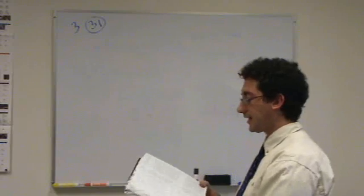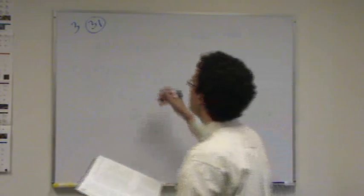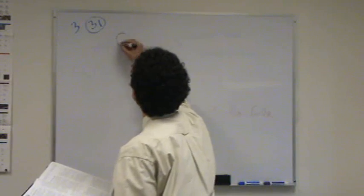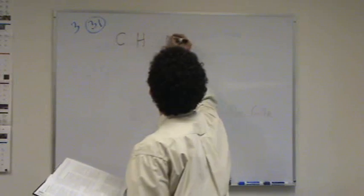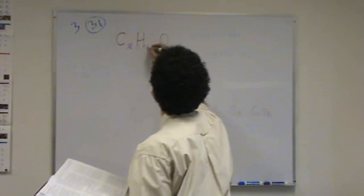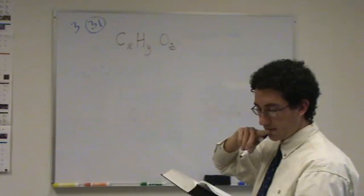Basically, diethylene glycol used to de-ice aircraft is a carbon-hydrogen-oxygen mixture. So carbon, hydrogen, oxygen. We'll just go X, Y, Z. We don't know how much of each there is.